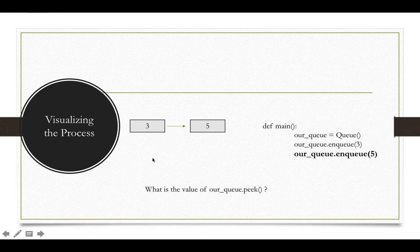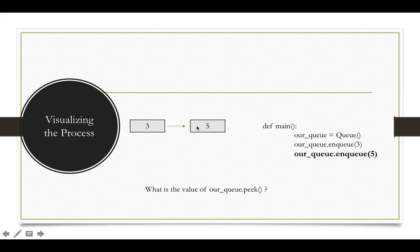Another thing to add about the queue is that there are two sides: the front of the queue on the left-hand side, and the rear of the queue on the right-hand side. When we add stuff to it, the new items are added to the back. So what is the value of our queue peek? If we were to use it, we would get three, because that's the thing at the very front of the queue on the left-hand side.